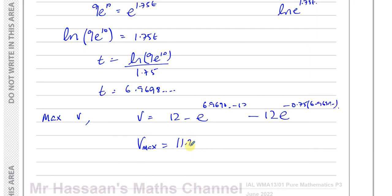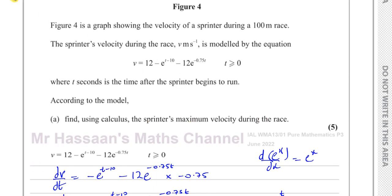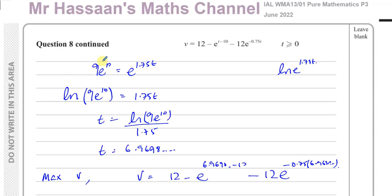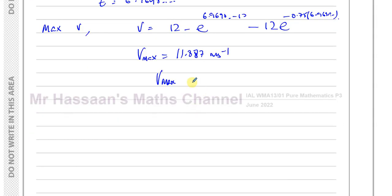That's 11.887 meters per second. Now we should give our answer to 3 significant figures unless otherwise stated. It didn't tell us how to round it, so we'll leave it to 3SF. That's going to be 11.9 meters per second. That's the maximum velocity that he reaches.